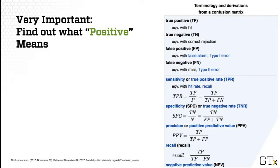A lot of terminology is actually defined based on positive — for example, true positive, false positive, and other measures like specificity and recall. All of those are dependent on the definition of positive, so it's extremely important to declare that very clearly.